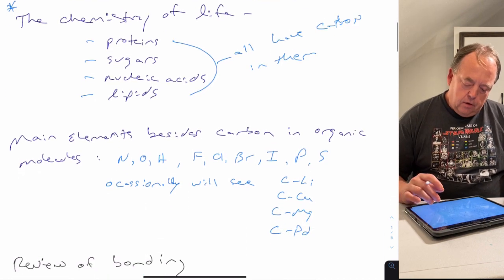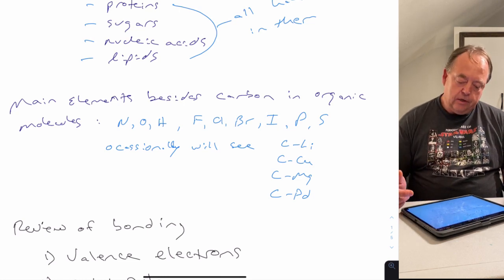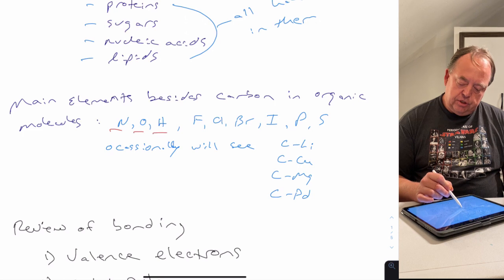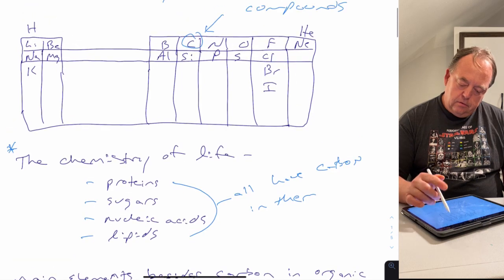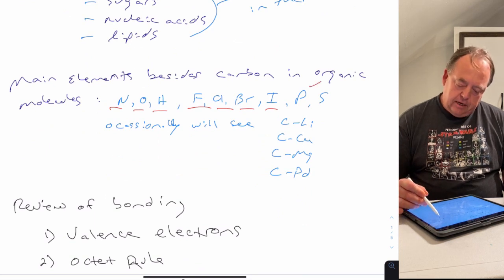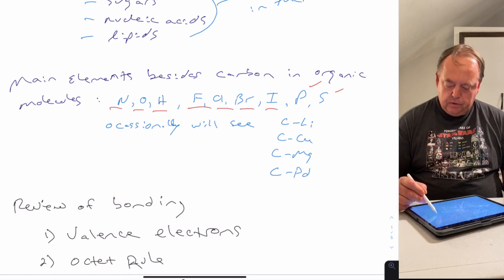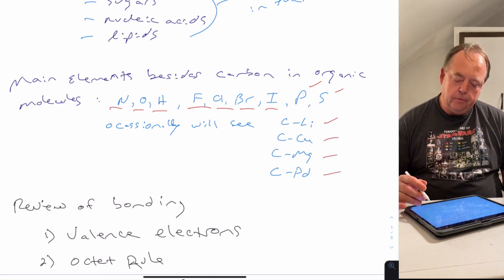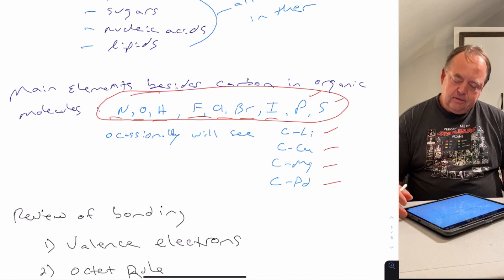The main elements we'll see in organic chemistry, besides carbon, are: nitrogen, oxygen, hydrogen, fluorine, chlorine, bromine, and iodine — fluorine, chlorine, bromine, and iodine are the halogens. Carbon is often found bonded to halogens, and also to phosphorus, sulfur, and occasionally some metals. In this class we'll see carbon attached to lithium, copper, magnesium, and palladium, for example, but most of the time we'll look at carbon attached to those core elements.